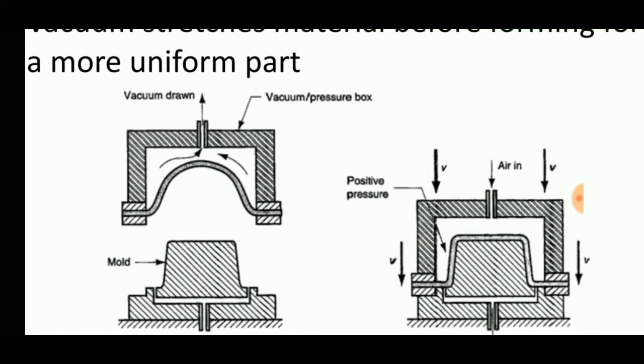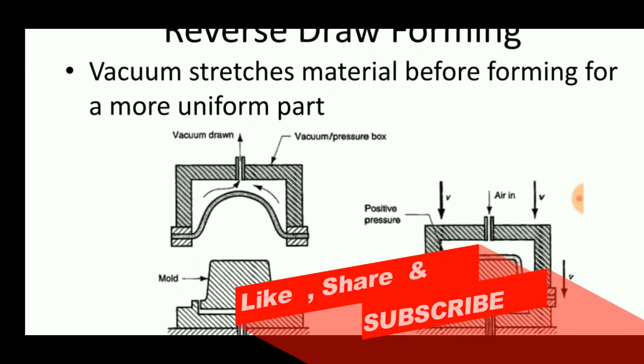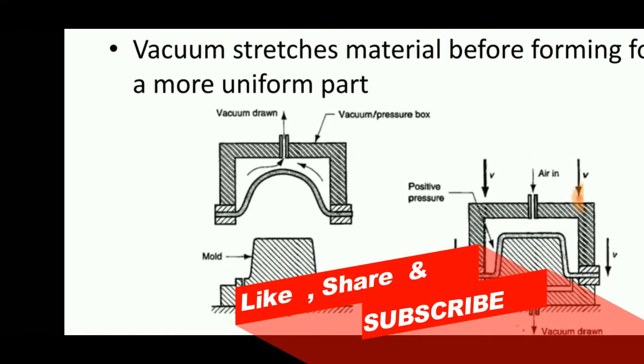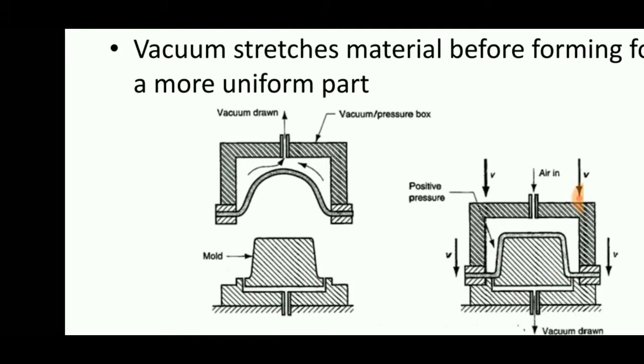This forming process uses a vacuum to stretch the sheet metal prior to molding or forming.